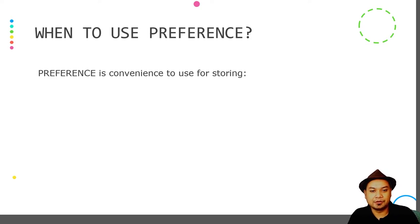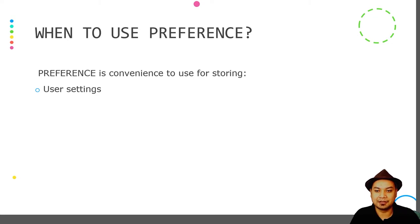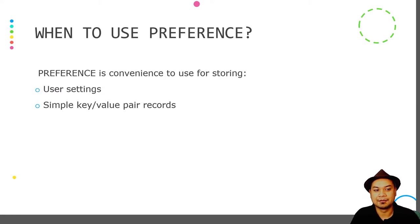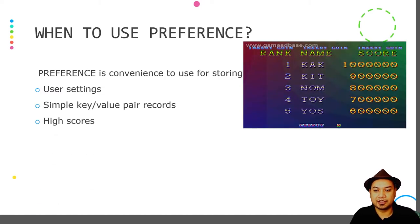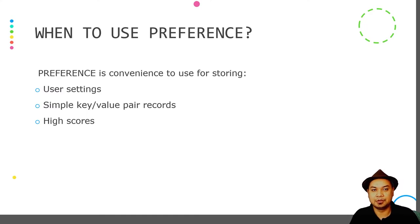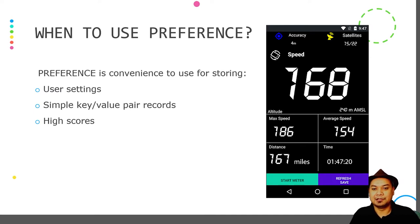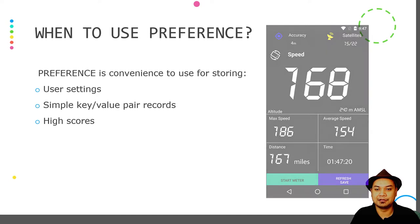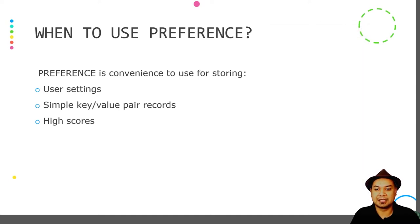Preferences is convenient to use for storing user settings — that's actually where the name comes from. It is also useful for storing simple key-value pair records, storing high scores for games, and storing maximum values in an application, like if you are developing a speedometer application where you need to track high speed and low speed.